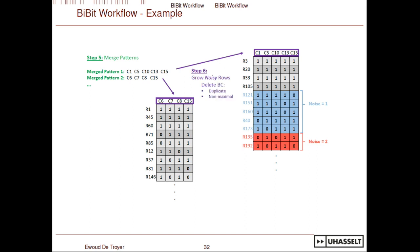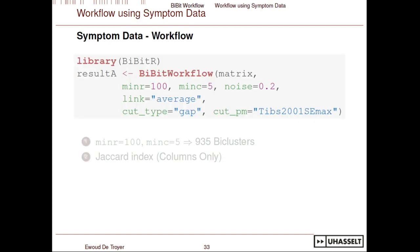In the final step, we also check for duplicate bi-clusters and delete non-maximal bi-clusters — if a bi-cluster is completely contained within another, we throw it away. This workflow is included in the package and is really simple: you use the BBit workflow function, give the two parameters for the original BBit algorithm, then give the noise percentage or number for the row-growing step. You can also decide which clustering algorithm and linkage to use.